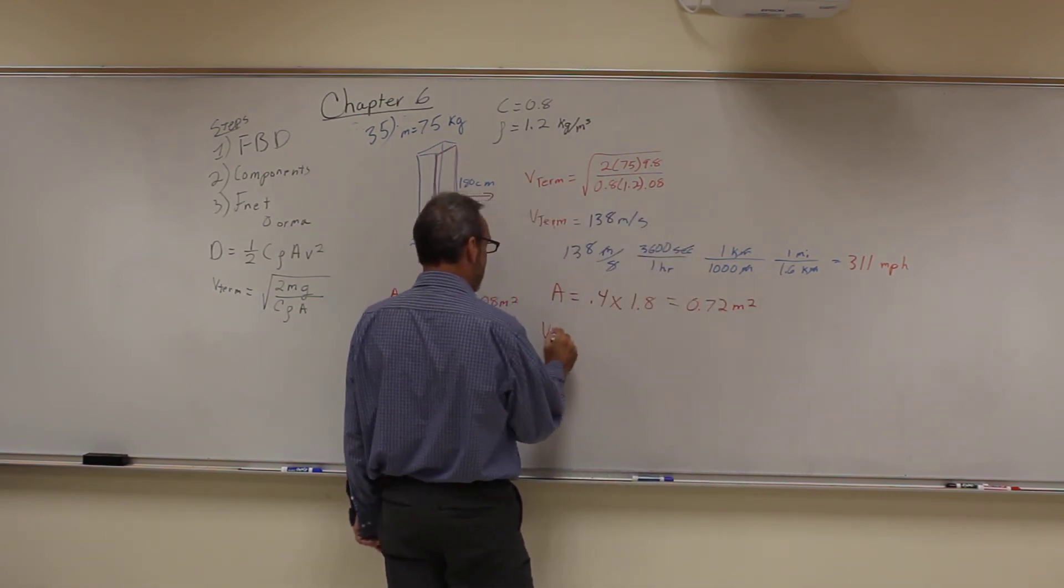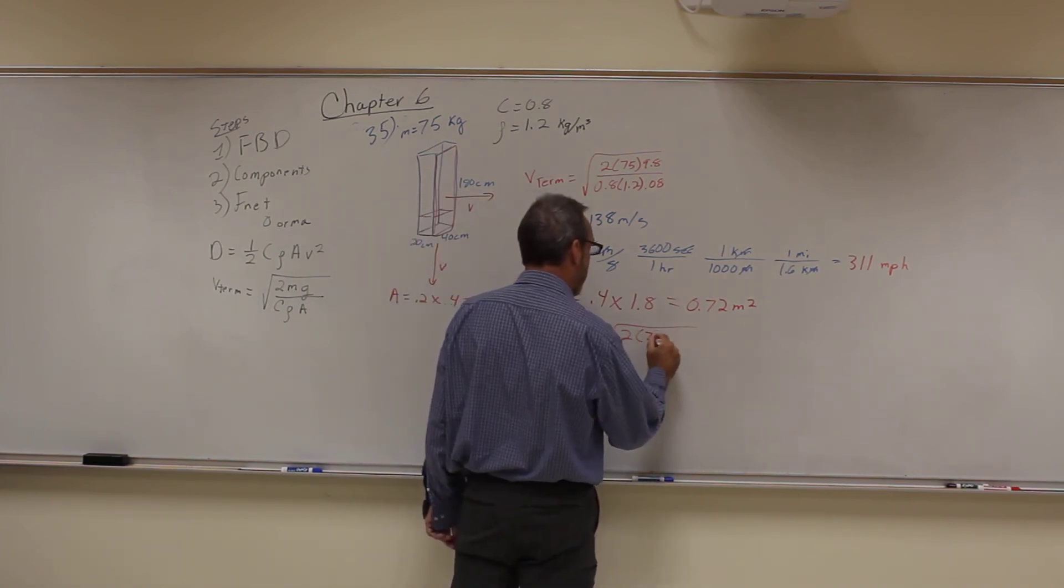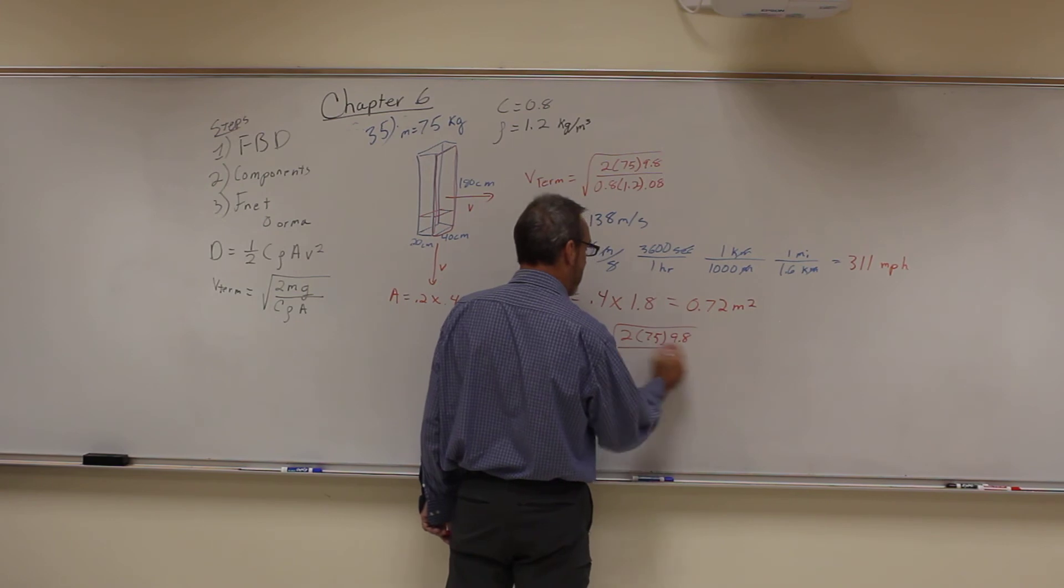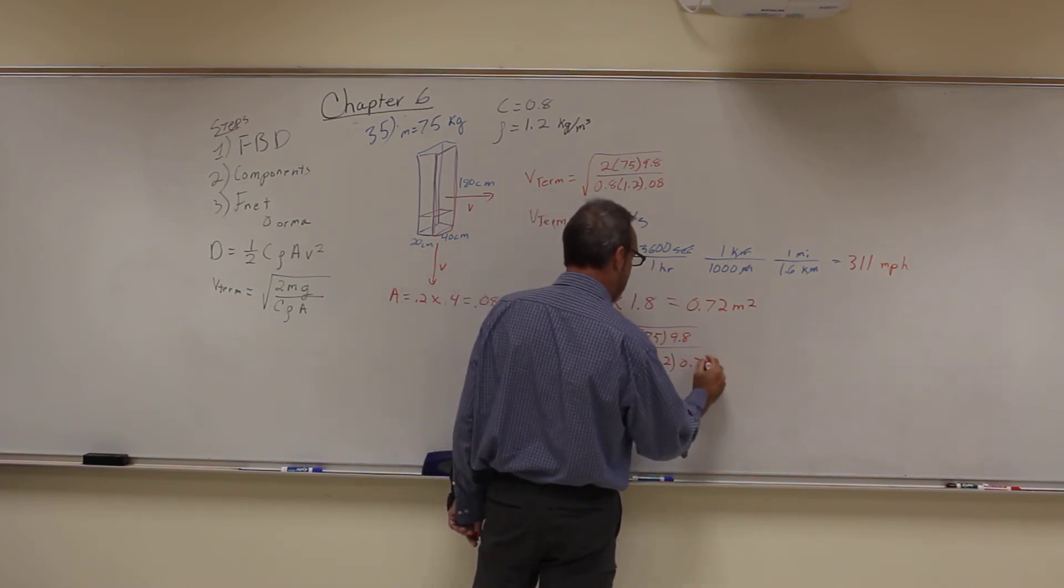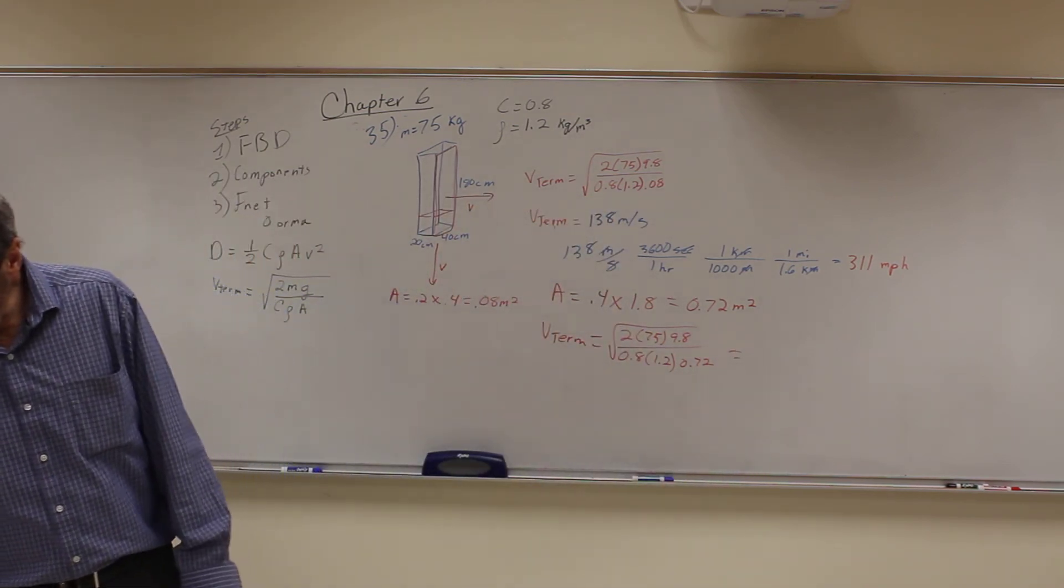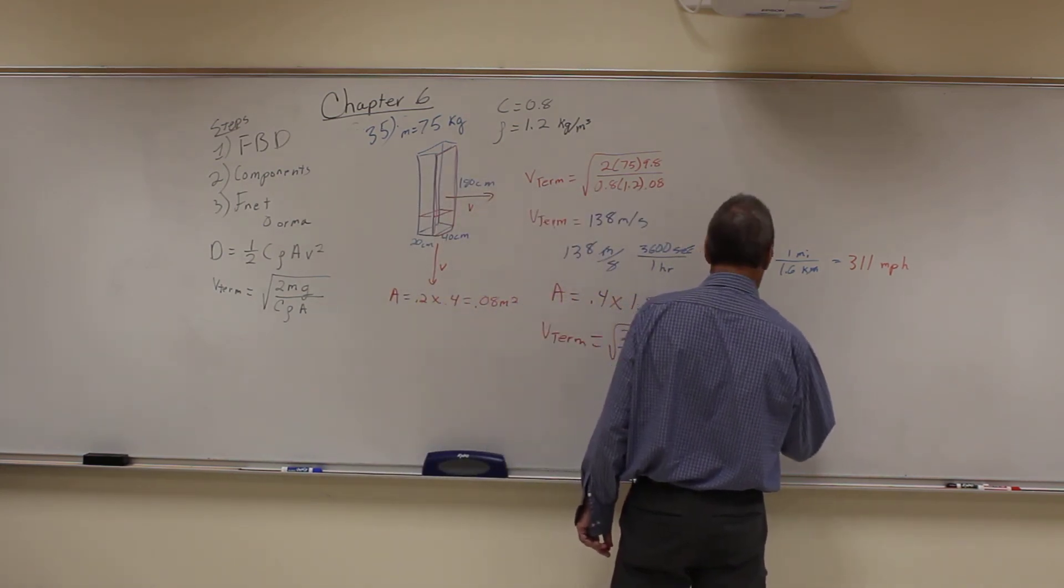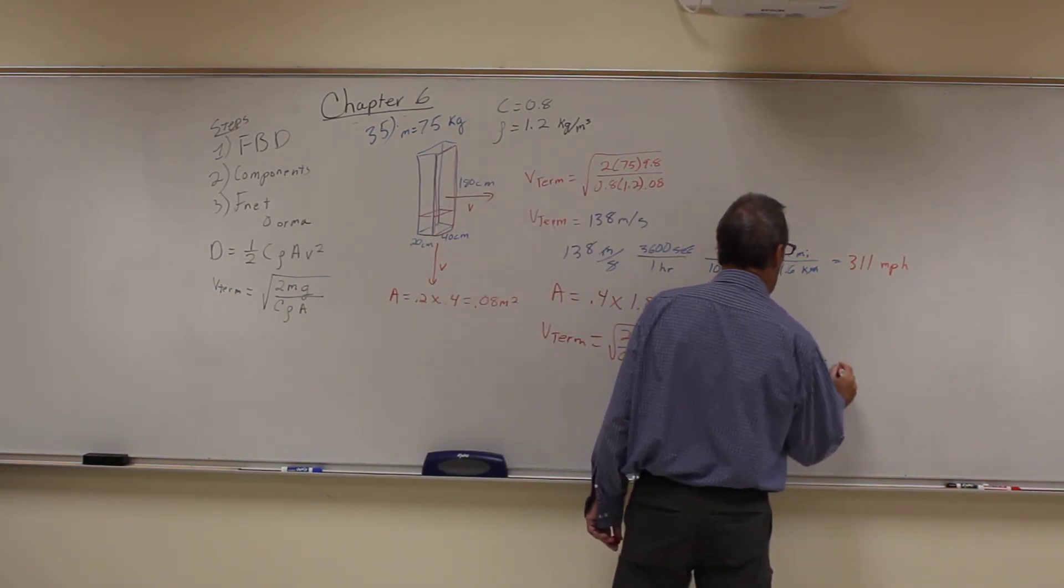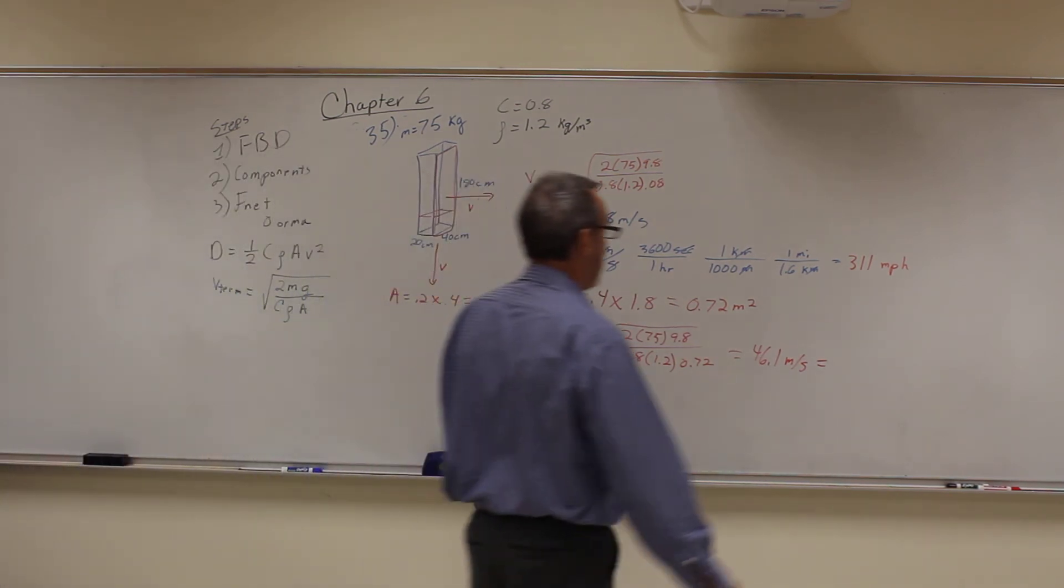When you plug that into your terminal velocity, everything else stays the same except the area. So this is 0.8, 1.2, this becomes 0.72. When you plug that in you get a value of 46.1 meters per second, or when you do the converting you get 104 miles per hour.